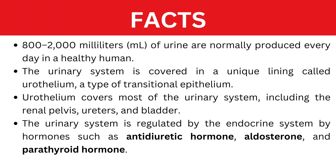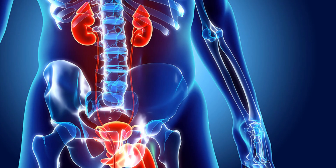There are some facts about the urinary system. 800 to 2,000 milliliters of urine are normally produced every day in a healthy human. The urinary system is covered in a unique lining called urothelium, a type of transitional epithelium, which covers most of the urinary system including the renal pelvis, ureters, and bladder. The urinary system is regulated by the endocrine system by hormones such as antidiuretic hormone, aldosterone, and parathyroid hormone.